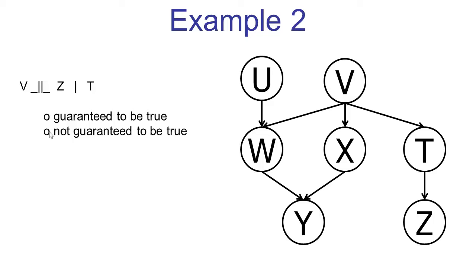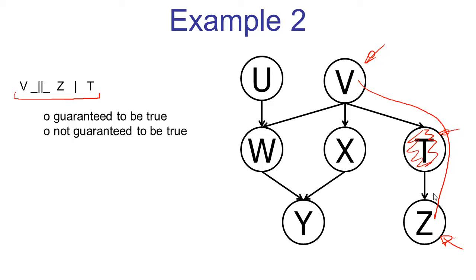Here's a second example. We're asked to verify the conditional independence of v and z given t. There's just one path connecting v and z. This one path is a causal chain with the middle node observed. This means that triple is inactive. Once we find an inactive triple along a path, we know the entire path is inactive. In this case, there's only one path between v and z, so we have found that all paths are inactive. When all paths are inactive, the independence is guaranteed to be true.